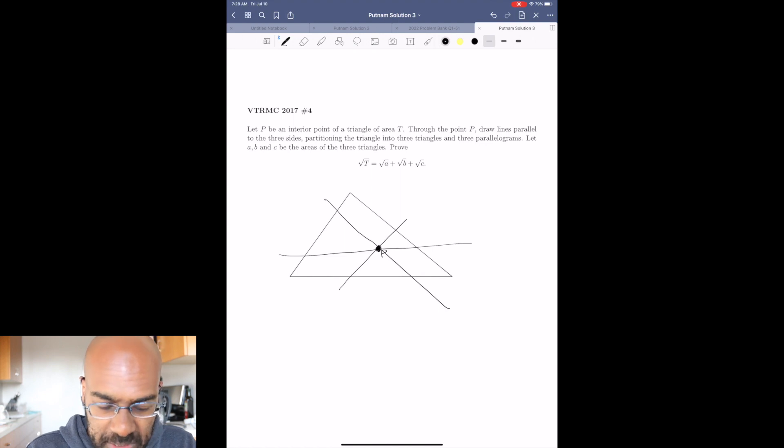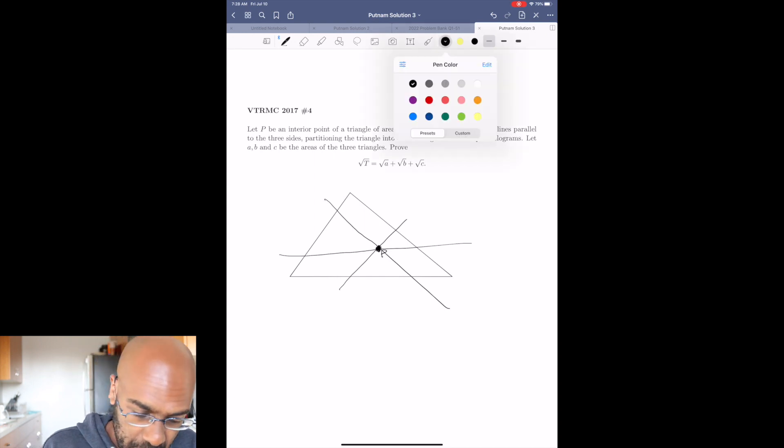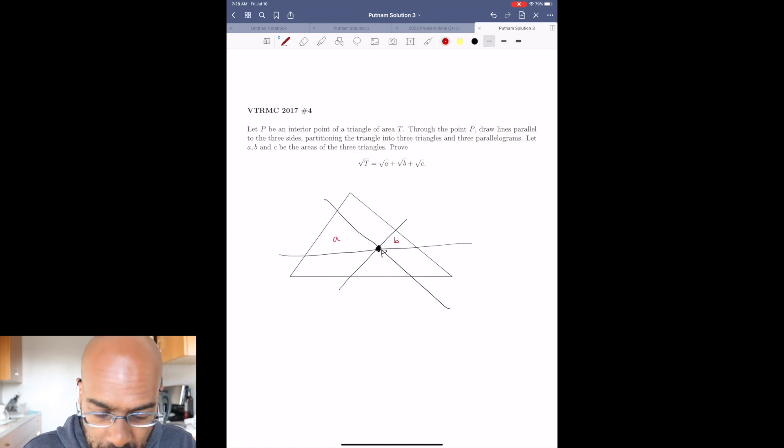So this splits the big triangle up into six regions, three parallelograms and three triangles. And we're given that the area of the three triangles are A, B, and C. And we know the area of the big triangle is T. And it asks us to prove this relationship that says the square root of T is the square root of A plus the square root of B plus the square root of C. That's kind of neat. This is a neat phenomenon that's true regardless of where this point P is.